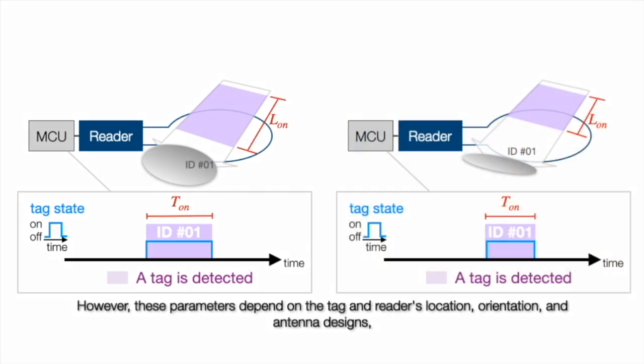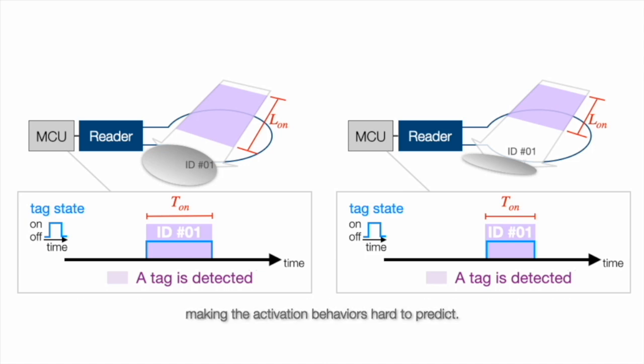However, these parameters depend on the tag and reader's location, orientation and antenna designs, making the activation behaviors hard to predict.